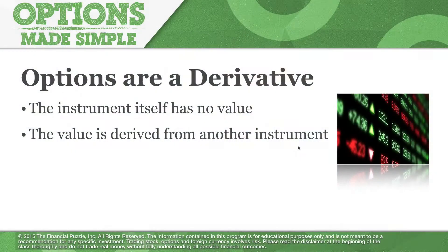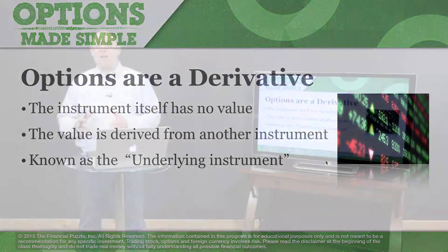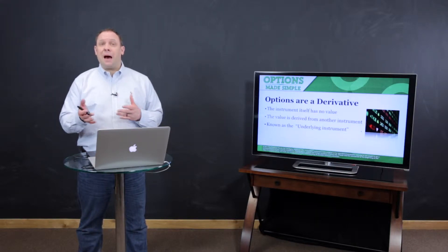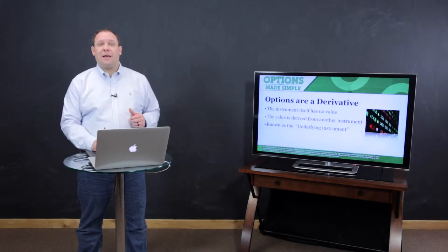In the case of stock options, that other instrument is the underlying stock. But maybe you're trading futures options or forex options — those are also derivatives. Their value is derived from the underlying asset, which could be forex, futures, or whatever you're trading. As a derivative instrument, it does not have any actual value in and of itself. All of its value is derived from something else, and that other instrument is called the underlying instrument.